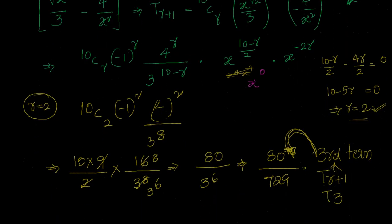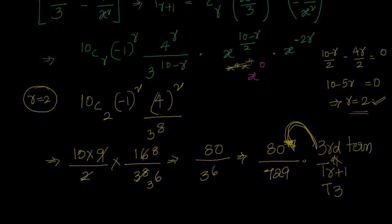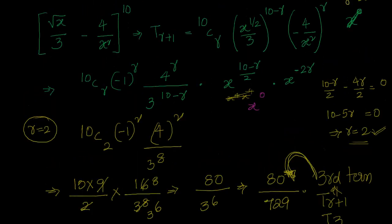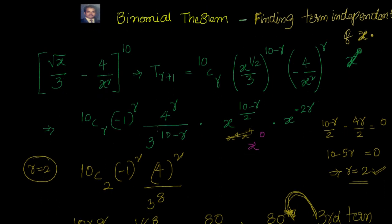Because it's independent of x, the term value will be nothing but the coefficient of the term. That's nothing but we got it here as 80 by 729. So this way you can do lot of examples to find out the term independent of x.